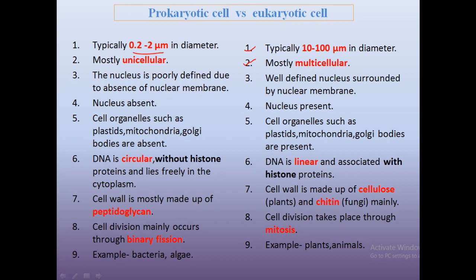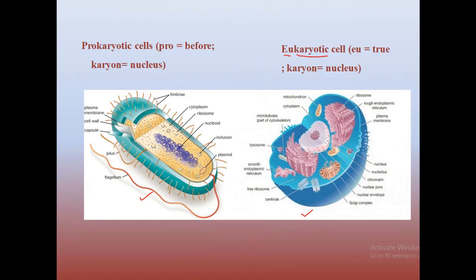In case of prokaryotic cells, the nucleus is poorly defined due to the absence of a nuclear membrane. In case of eukaryotic cells, there is a well-defined nucleus surrounded by a nuclear membrane. In this diagram we can see that in the eukaryotic cell the nucleus is present inside a double membrane-bound space.